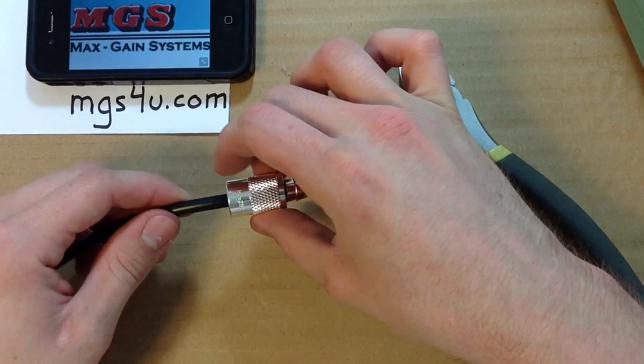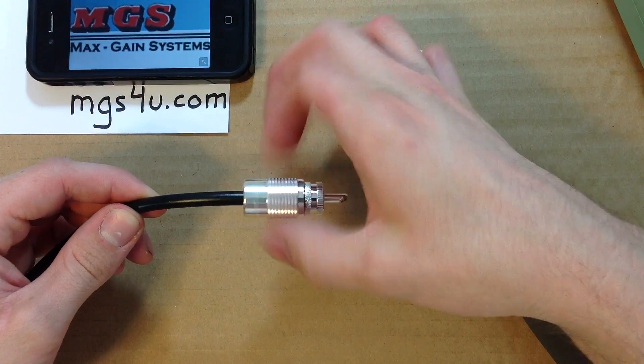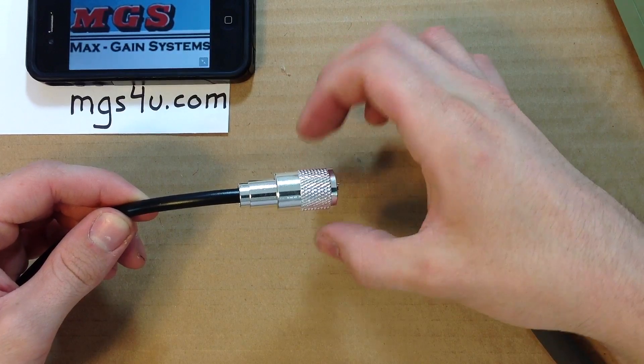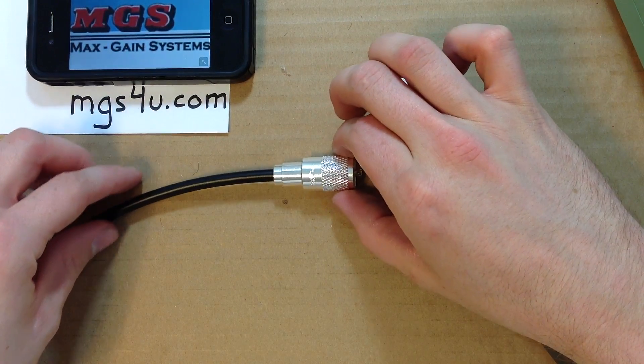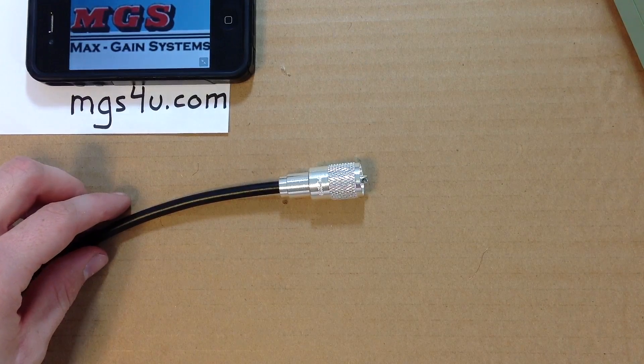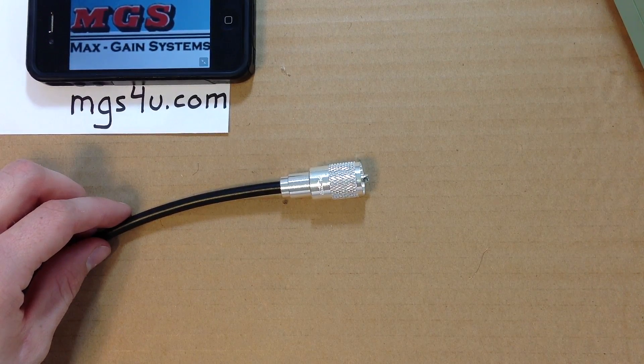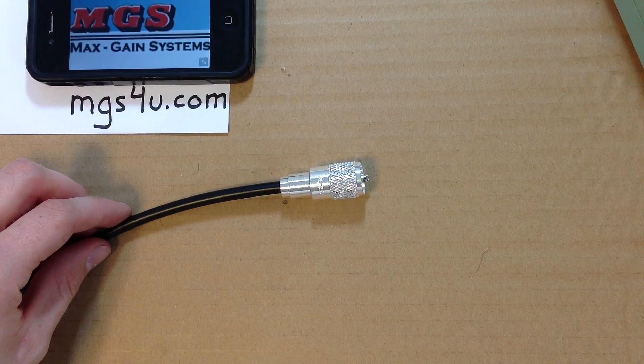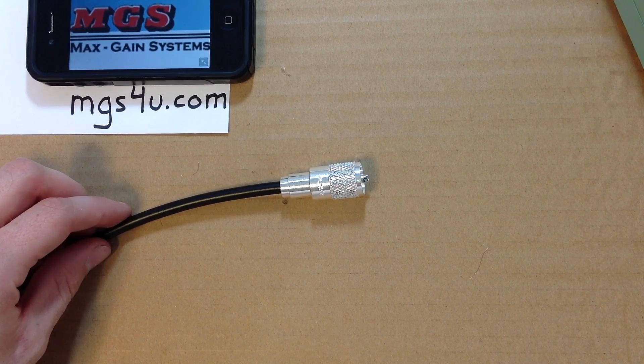Now be careful and do not touch the main body of the PL259 but grab the outer shell we placed on the cable earlier and slide it up the PL259 body. It will transfer heat quickly so let the connector cool before attempting this. You have just completed the installation of the PL259 connector onto RG8X coaxial cable.